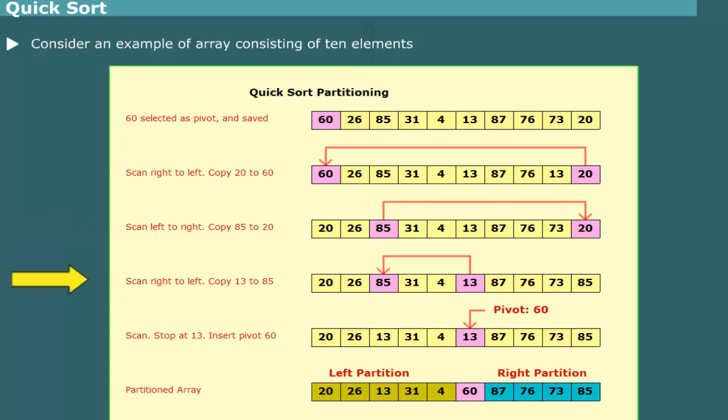The array is next scanned from right to left, beginning with element 85, and skipping all elements that are larger than pivot 60. Thus, we stop at the element 13. The element 13 is copied into the element pointed to by the left pointer. Next, the array is scanned beginning with element 31, and skipping elements that are smaller than the pivot, and stopping when left and right pointers cross over. Now, both the pointers point at element 13 between the element 4, 87, as shown. We now replace the element 13 with pivot 60.